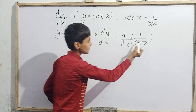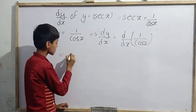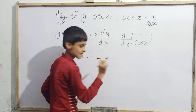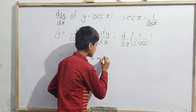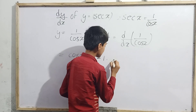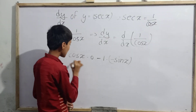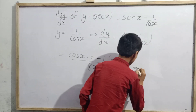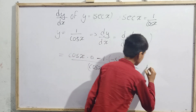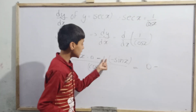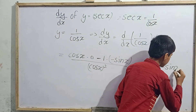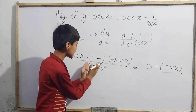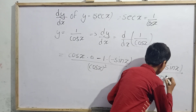In the u/v method, we take the denominator first: cos(x) times the differentiation of 1, which is 0, minus 1 times the differentiation of cos(x), which is −sin(x). All of this is divided by the square of the denominator, that is cos²(x). So we get: cos(x)·0 − 1·(−sin(x)), all over cos²(x).